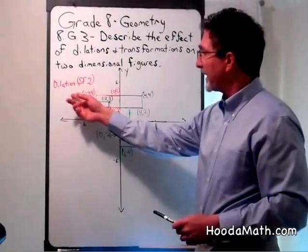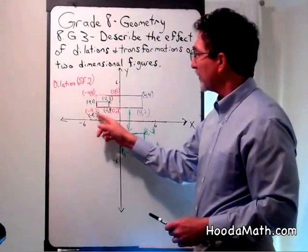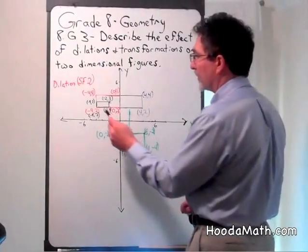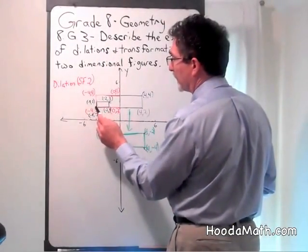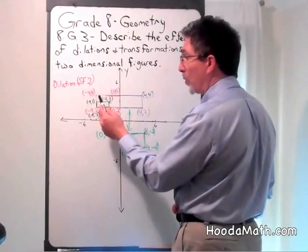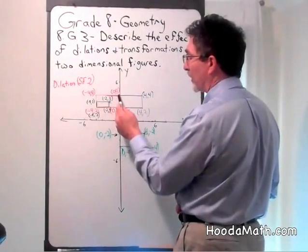First thing I'm going to do is dilate this rectangle but keep the negative 4, 2 vertex the same. So I'm going to double its height from 1 to 2 and double the width from 2 to 4.